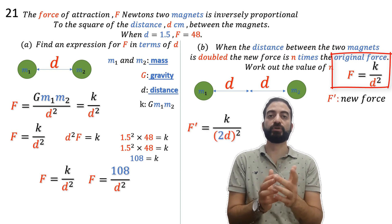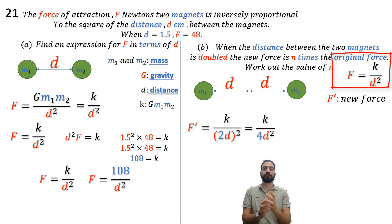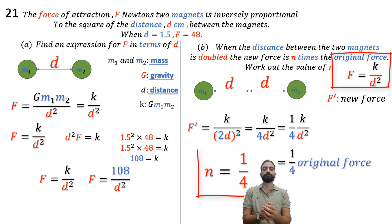If we factor out the 2, we find that the new force equals one-quarter of the original force. This means that n equals 1/4.